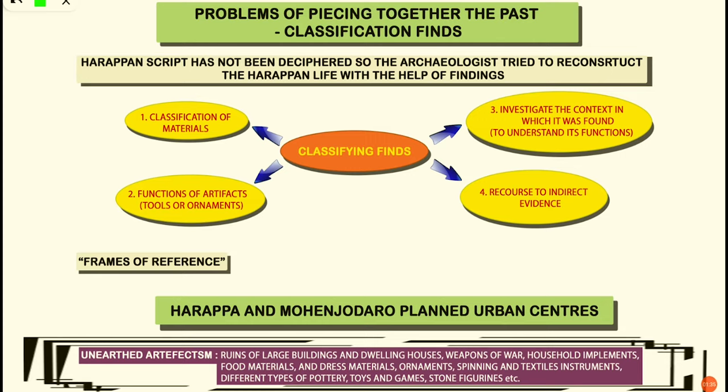Problems of piecing together the past. We will discuss the classification of findings which archaeologists use to reconstruct the life of the Harappan people. Usually, archaeologists try to reconstruct the past on the basis of artifacts recovered or through written records. But even though we have the Harappan script, it has not yet been deciphered, which means archaeologists still do not know how to read it. So they try to understand the life of the Harappan people on the basis of findings.